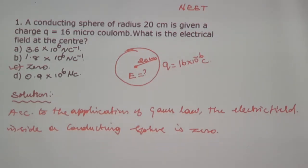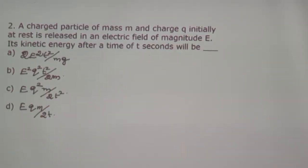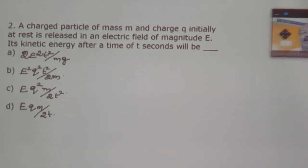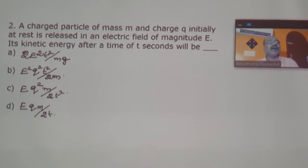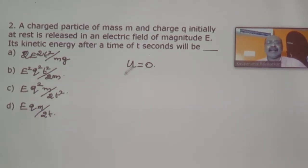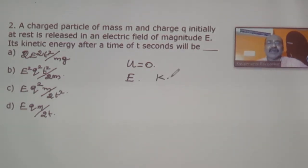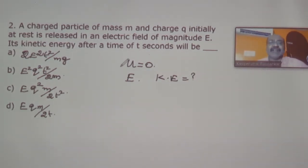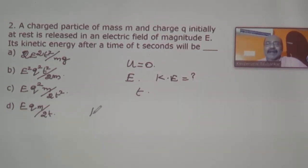Problem number two: a charged particle of mass m and charge q is initially at rest, so u equals zero, in an electrical field of magnitude E. You are asked to calculate the kinetic energy of the charged particle after a time of t seconds.